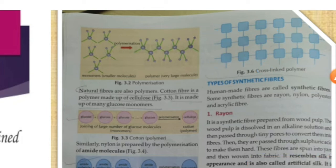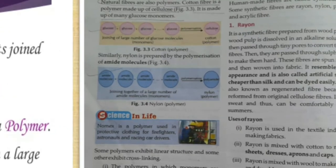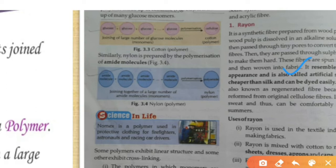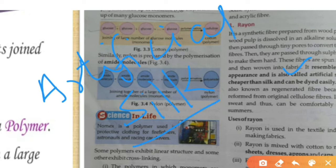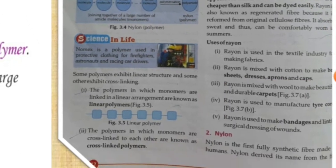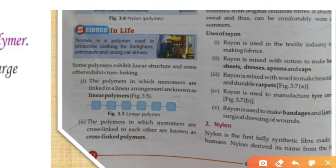Now we are going to learn some important polymers. The first is rayon. We start with rayon because it is also called artificial silk — please remember this, it is a one-mark question. Rayon is cheaper than silk and dries easily. It is used in the textile industry and we can make shining sheets, dresses, aprons, and caps from it.